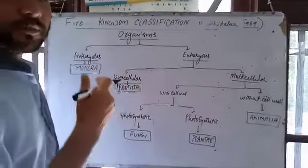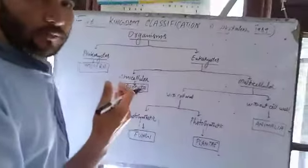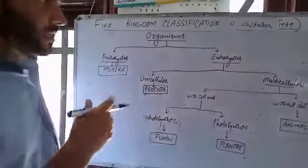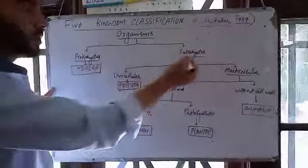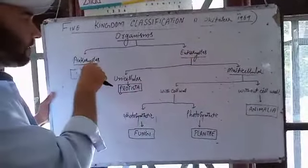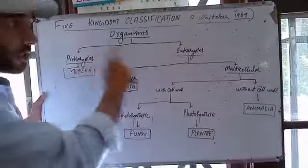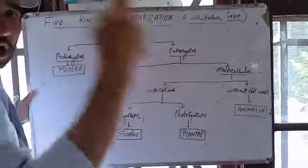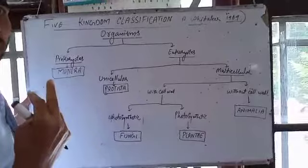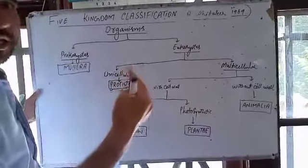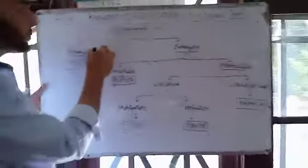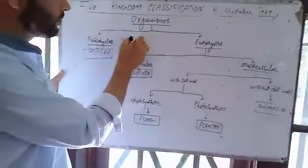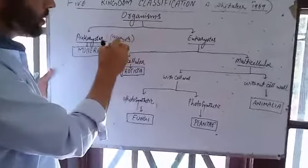Number one: all organisms are either prokaryotes or eukaryotes. Prokaryotes have a primitive nucleus, and eukaryotes have an advanced nucleus. All organisms are first categorized into these two major domains — Prokaryota or Eukaryota.